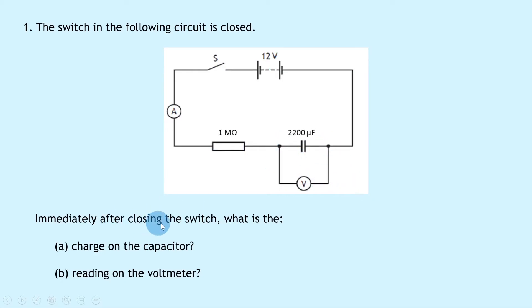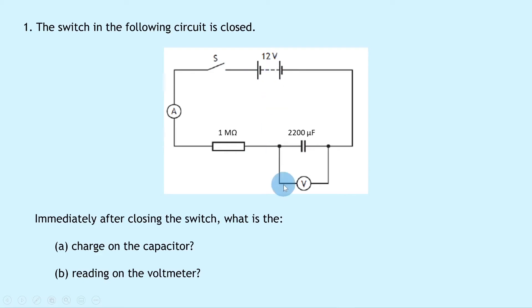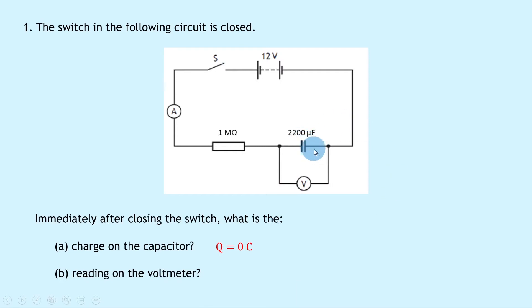It then says immediately after closing the switch, what is the A: current charging the capacitor and B: reading on the voltmeter? Well, as soon as you close the switch there hasn't been enough time for charge to build up on the capacitor plates, so we can say that the charge Q is equal to 0 coulombs. Similarly for part B, there hasn't been enough time for the potential difference across the capacitor to start increasing, so initially the potential difference V is equal to 0 volts.